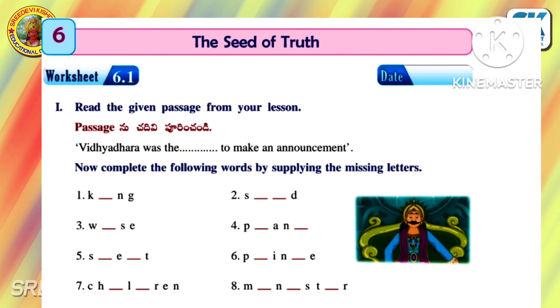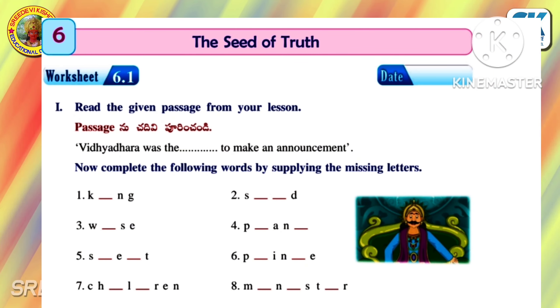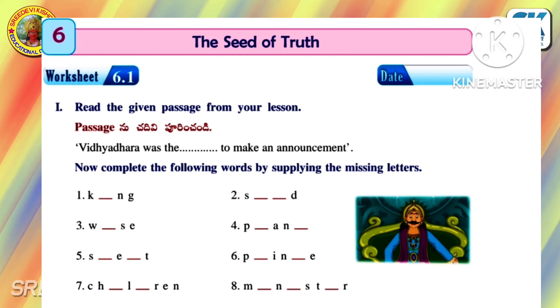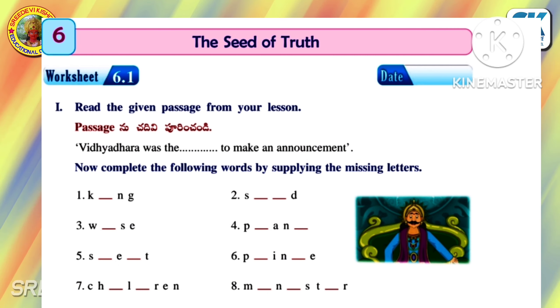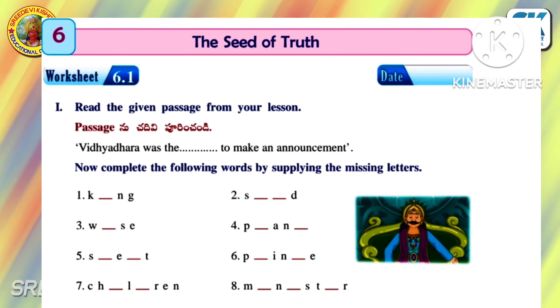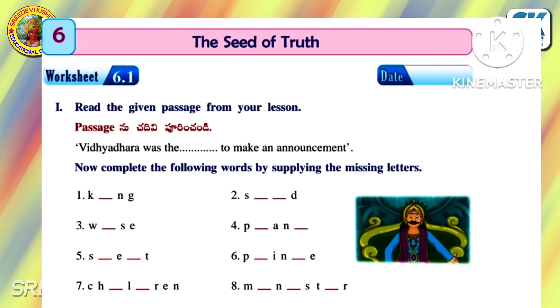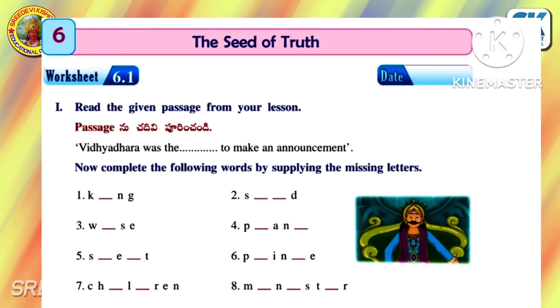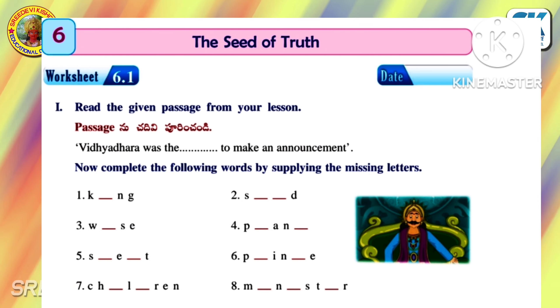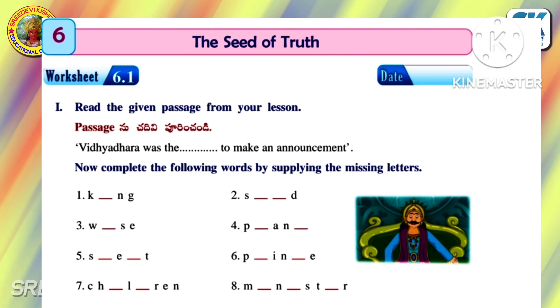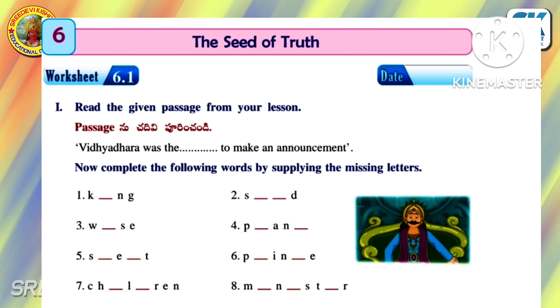Worksheet 6.1: Read the given passage from your lesson — Vidyadhara was the... to make an announcement. Now complete the following words by supplying the missing letters.